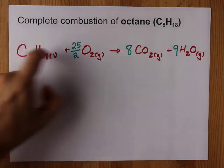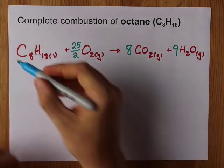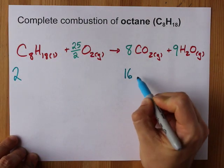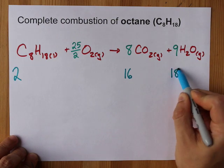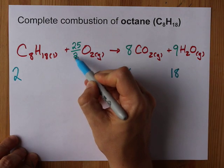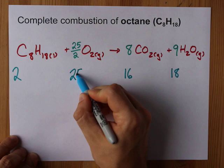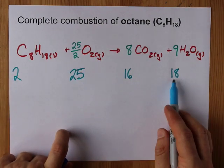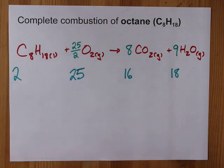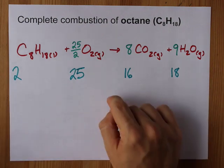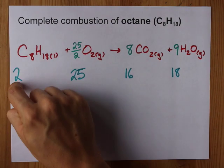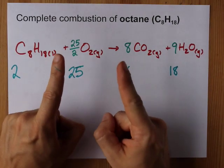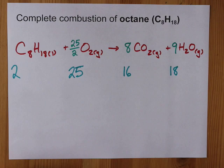In that case you're going to want to double all of these coefficients. 1 becomes 2. 8 becomes 16. 9 becomes 18. 25 over 2 times another 2 gives you the 25. You can take it on faith that 2, 25, 16, and 18 gives you the balanced chemical reaction. Or you can balance it your damn self by starting with a 2 in front of octane. I don't care. This is it. You got what you needed from me. Best of luck to you.